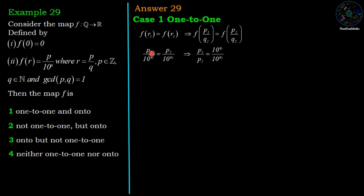Therefore we have p1/10^q1 = p2/10^q2. We can rewrite this equality: p1/p2 = 10^q1/10^q2.